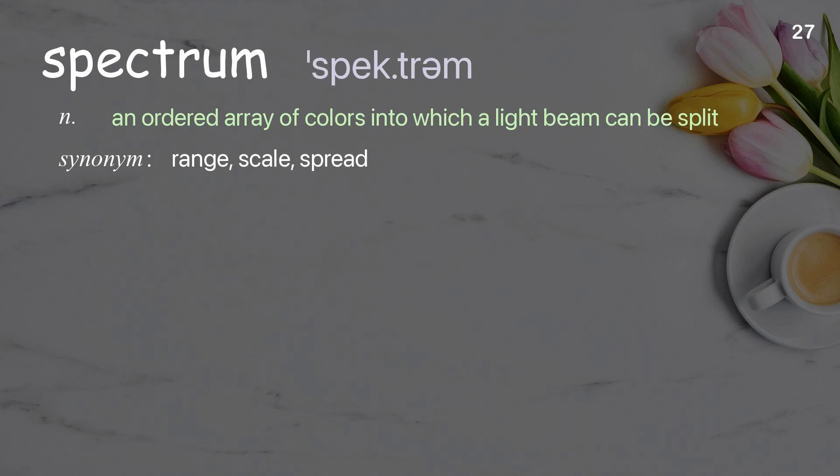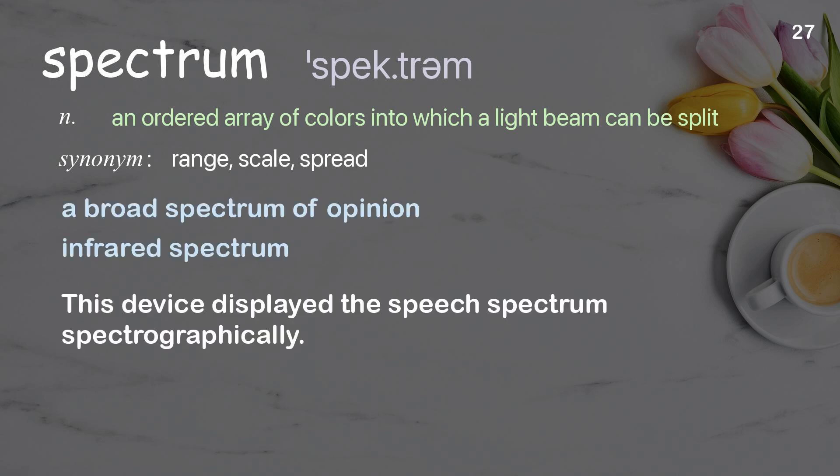Spectrum: an ordered array of colors into which a light beam can be split. Examples: a broad spectrum of opinion; infrared spectrum. This device displayed the speech spectrum spectrographically.